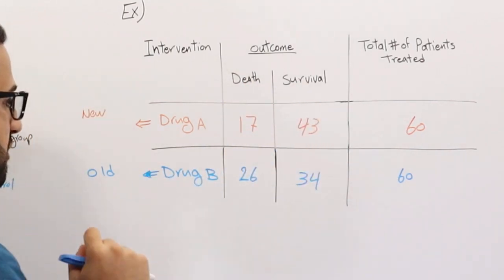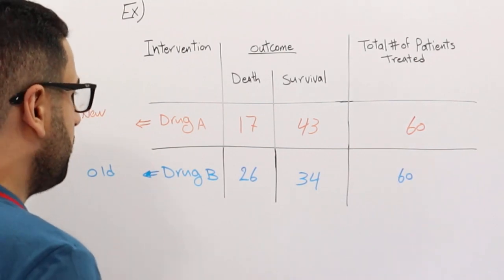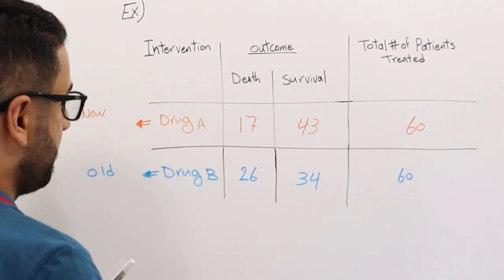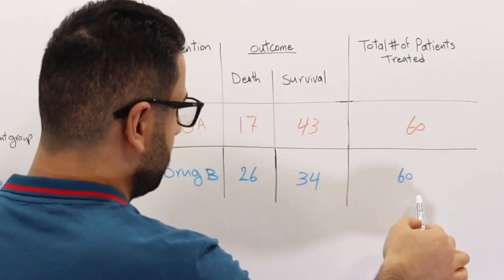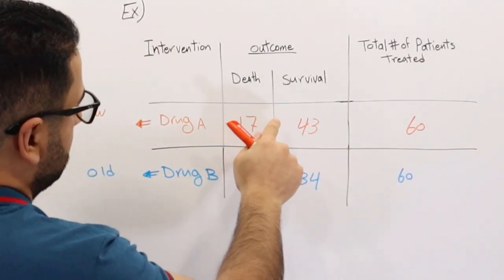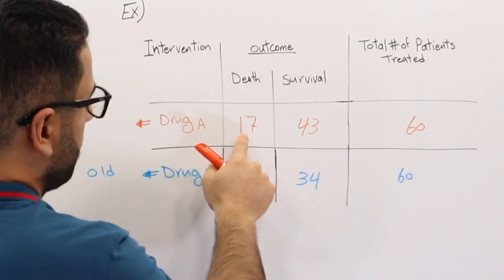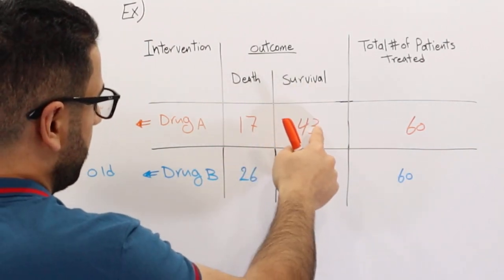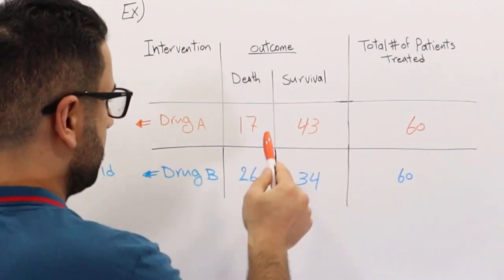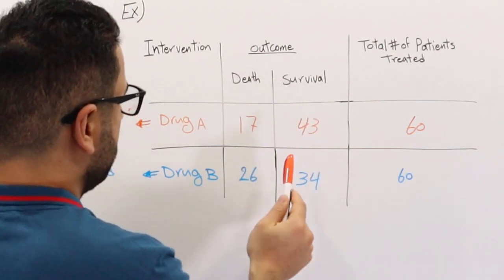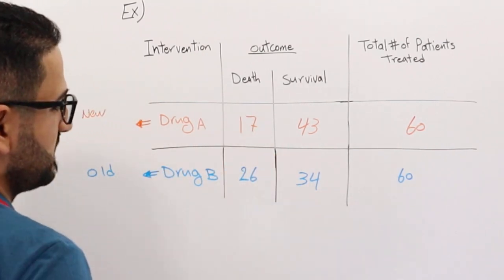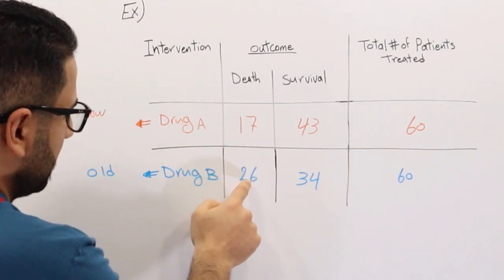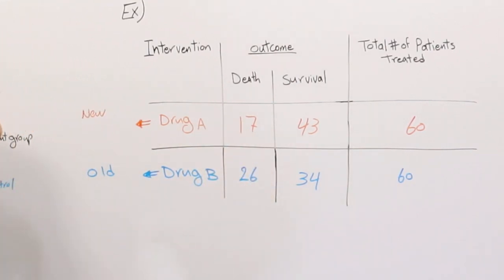The new medication also had 60 patients for a direct comparison. Their number of deaths was 17 — way less than the old drug — and the survival rate was 43 patients, compared to only 34 who survived with the old one. With the old medication, 26 died versus 17 with the new one.